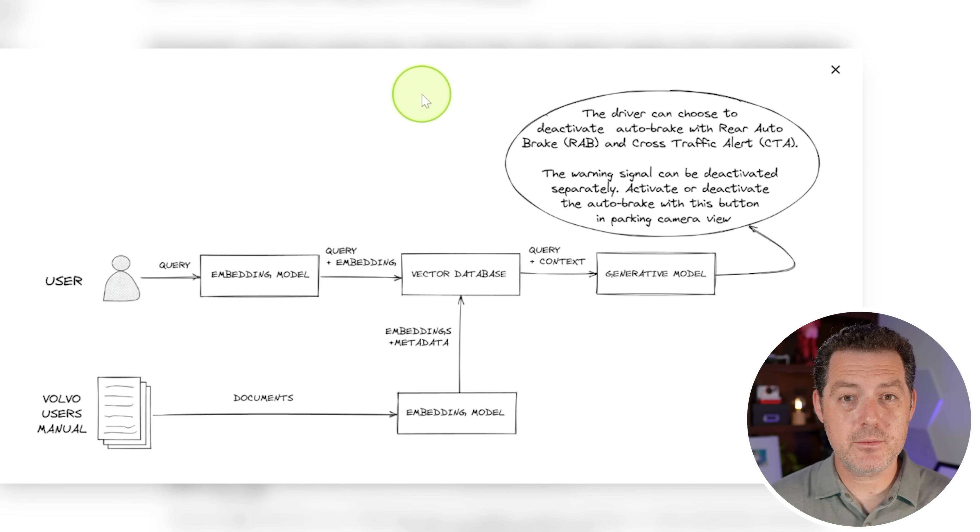So we have the user who sends a query, again, the same one about the Volvo. It first goes to the embedding model. The query itself gets converted into an embedding, then we query the vector database. And we say what's similar to this question about the Volvo, and it grabs all the similar relevant data.